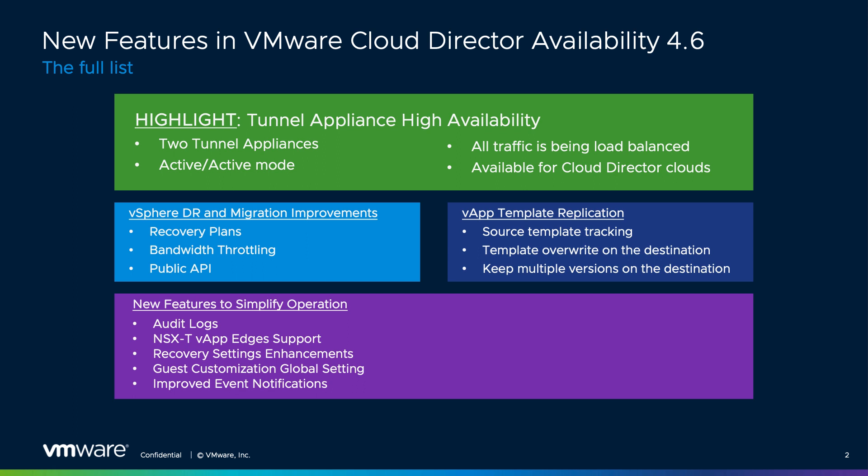We also enhanced the already existing vApp template migration to support template modifications. VMware Cloud Director Availability can now check for template changes and perform an automated migration if one is detected. Based on the chosen settings, it can overwrite the existing template at the destination catalog or create a new version and keep the old ones as well.